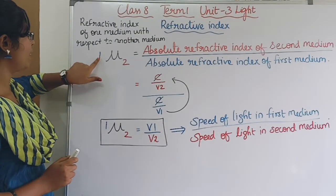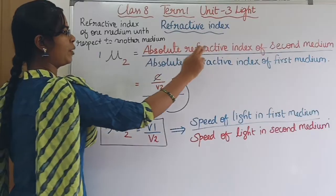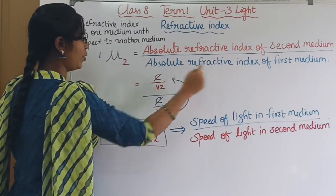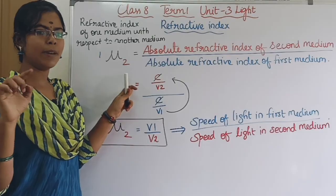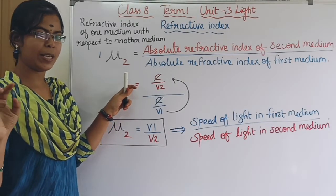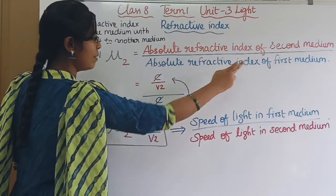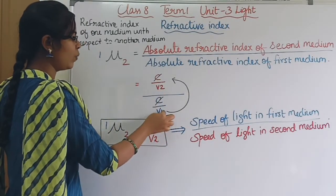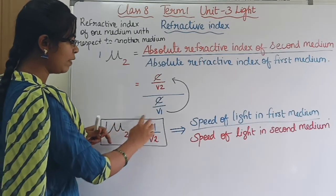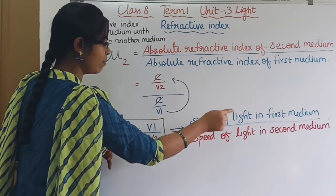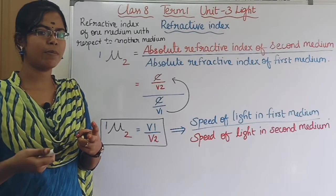The relative refractive index of the first medium with respect to the second medium equals the absolute refractive index of the second medium divided by the absolute refractive index of the first medium. Using the formula mu = c/v, we get: C divided by V2, over C divided by V1 — C cancels — giving us V1 divided by V2. So the relative refractive index equals V1 by V2, the speed of light in the first medium divided by the speed of light in the second medium.